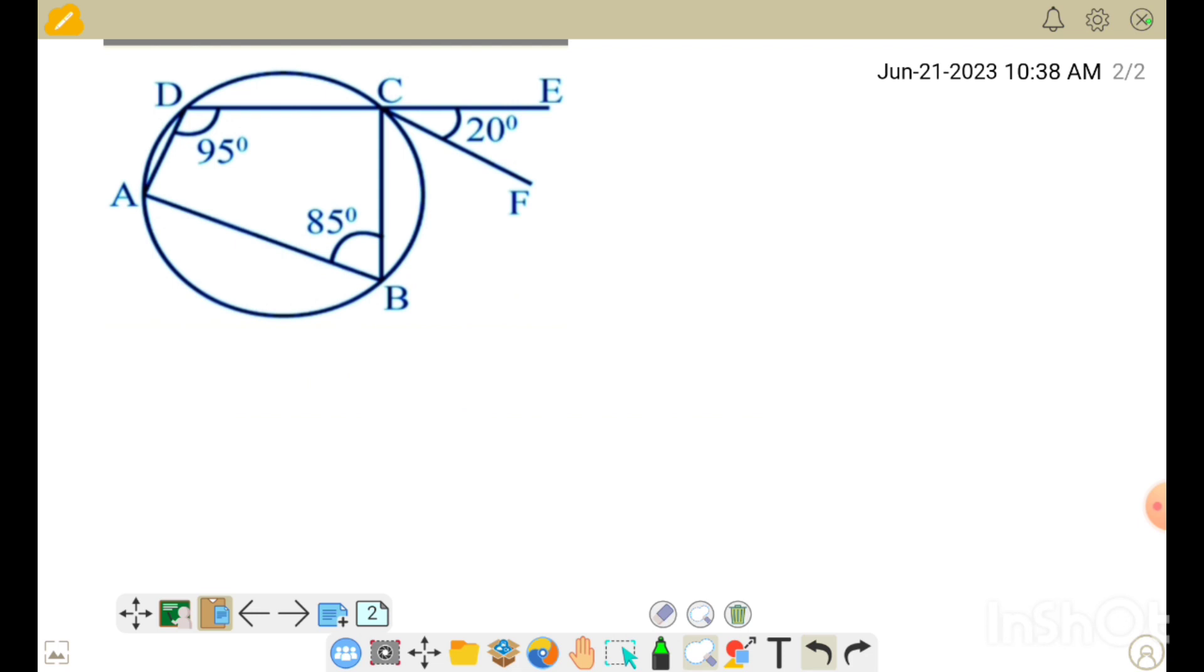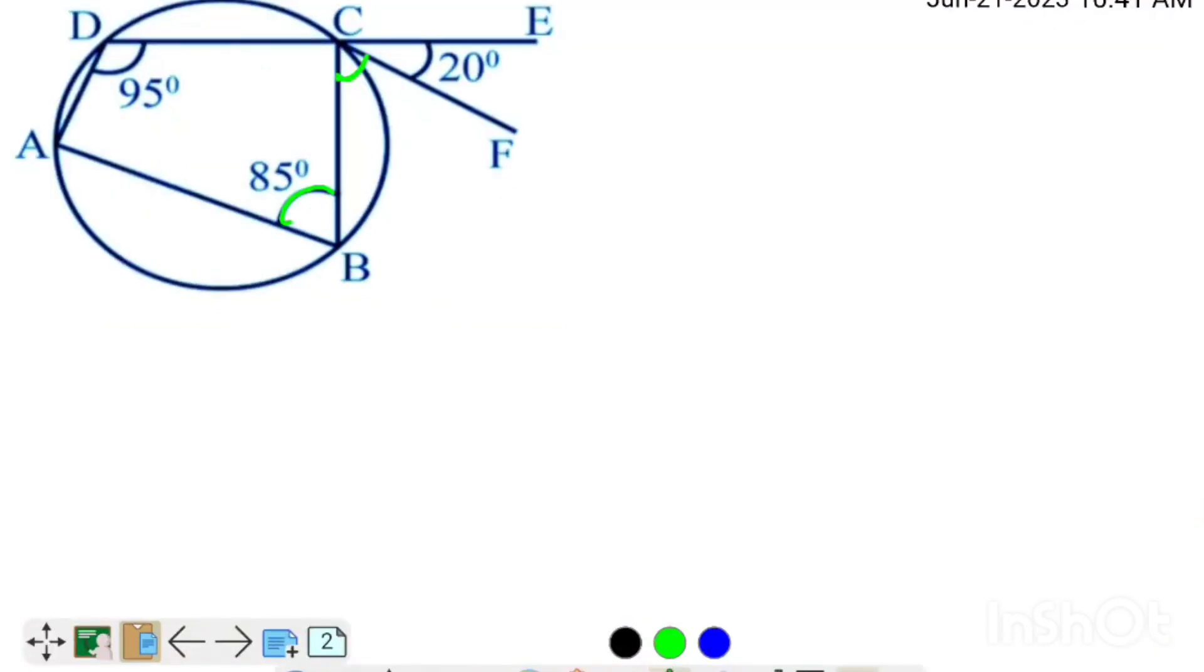This is the figure and it is given in the question that CF is parallel to AB. So this angle will be equal to this angle, alternate interior angles. Angle FCB will be equal to 85 degrees.